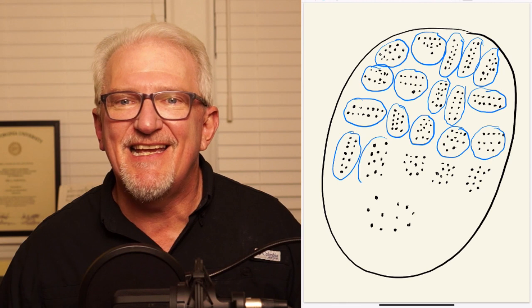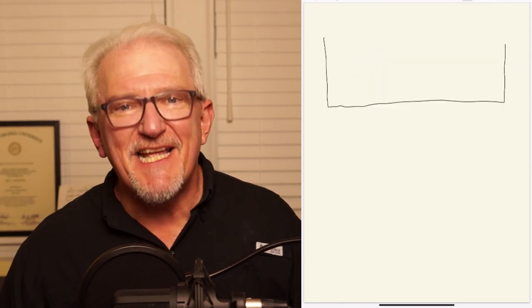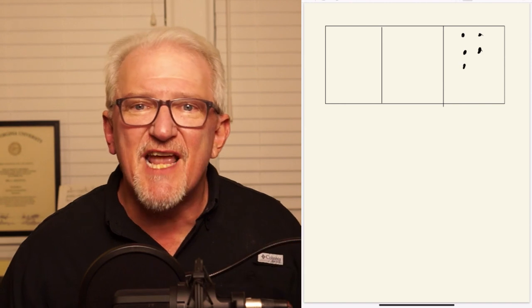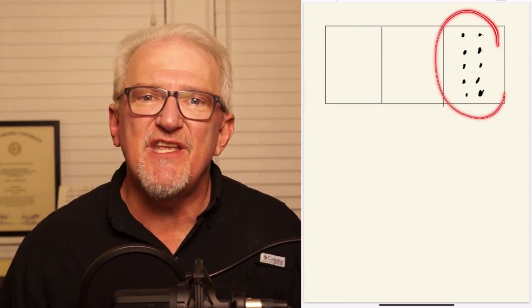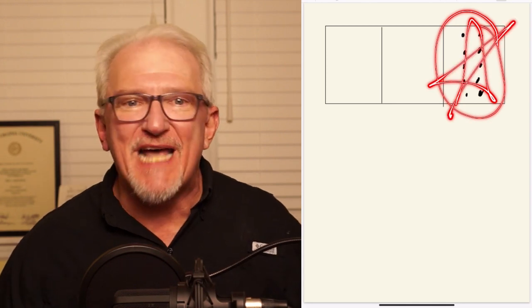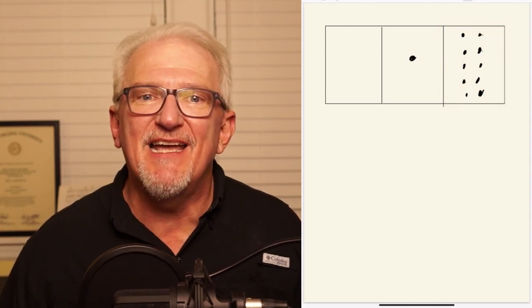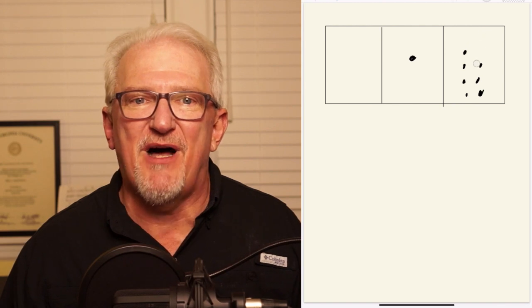Rather than drawing 287 dots explicitly, let's begin by drawing 3 boxes. In the rightmost box, we will begin drawing dots with the understanding that whenever 10 dots have been drawn, all of these dots will explode out of the box and be represented instead by a single dot in the middle box.